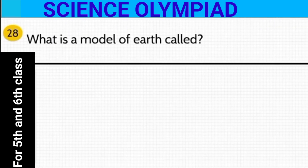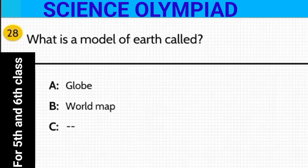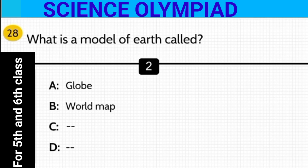What is the model of earth called? Is it a globe or a world map? The model of earth is known as a globe — option A.